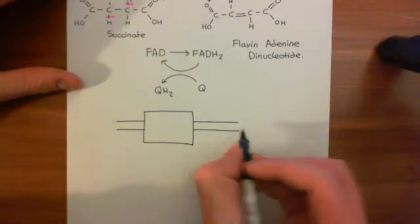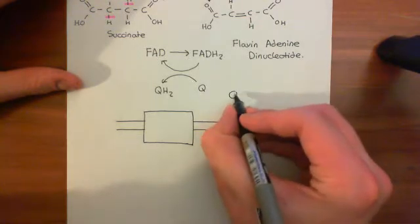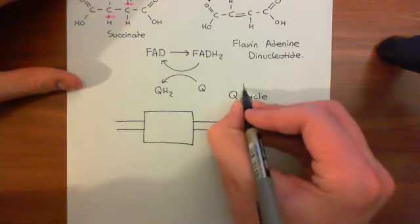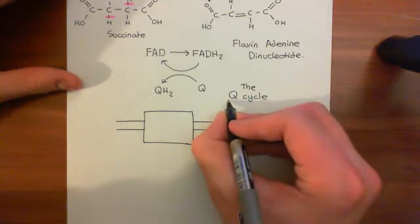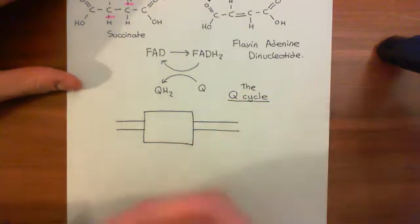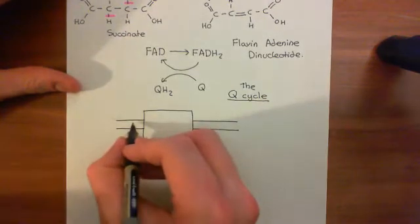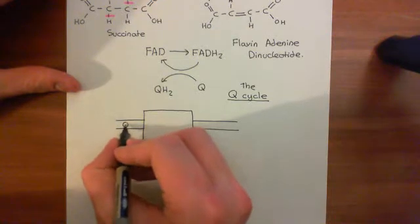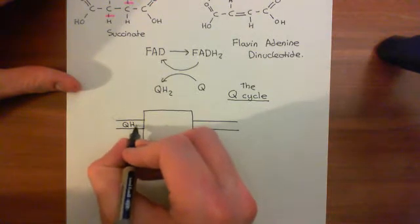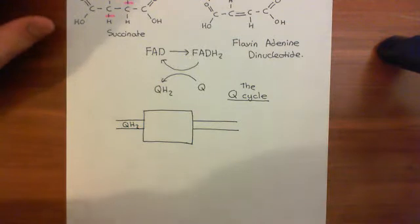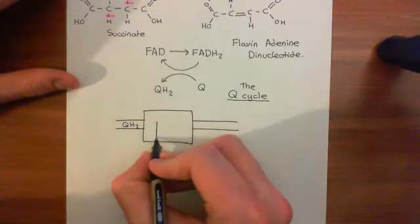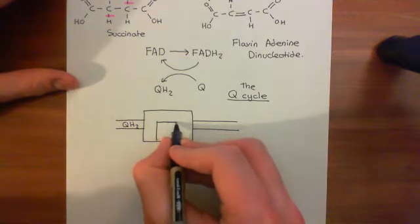What's going to follow is something called the Q-cycle, and this is quite clever. Basically, what's going to happen is a molecule of ubiquinol is going to come in. We're going to have to show this in two separate stages. Now there are many important parts of complex 3.